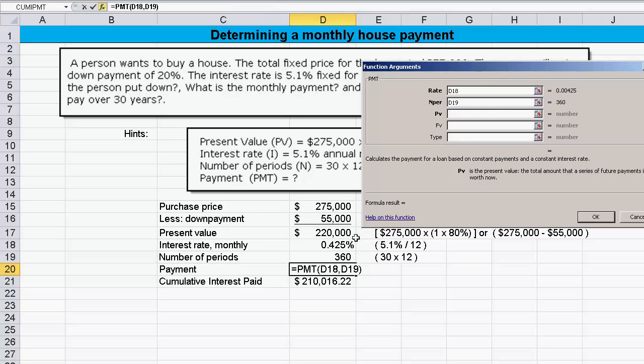Present value is the $220,000. Now, if I leave that as a positive number, it's going to come up with a payment that's negative. And the reason for that is it's the way Excel and financial calculators work. They think about cash flow in terms of positive and negative. Positive being a positive cash flow. Negative being a negative cash flow.